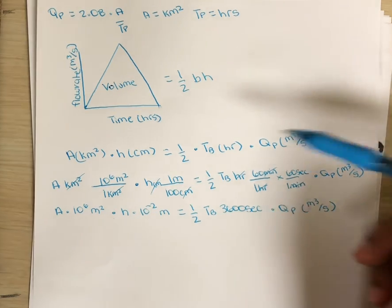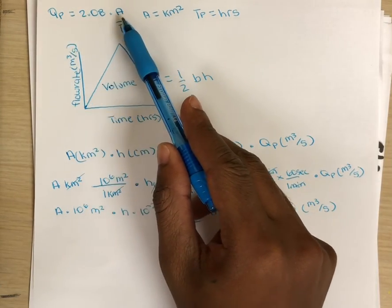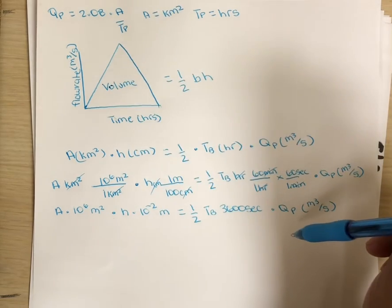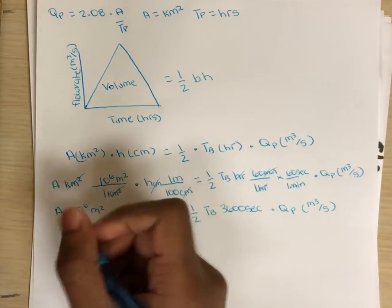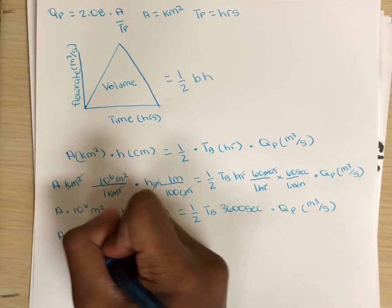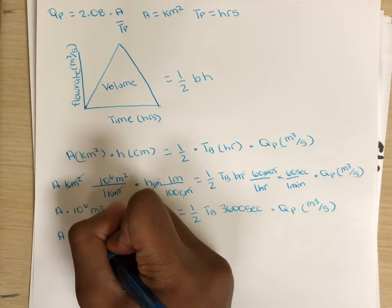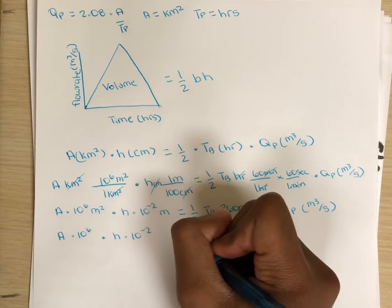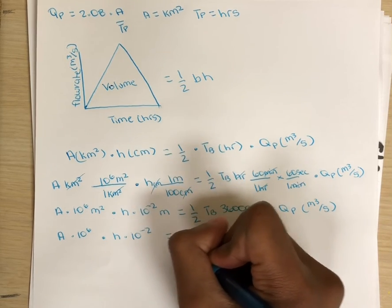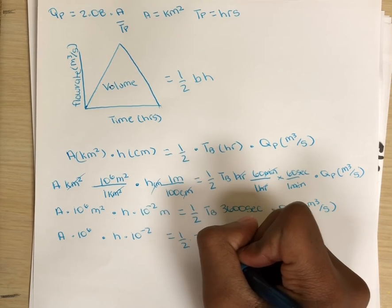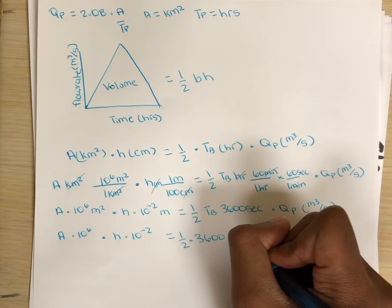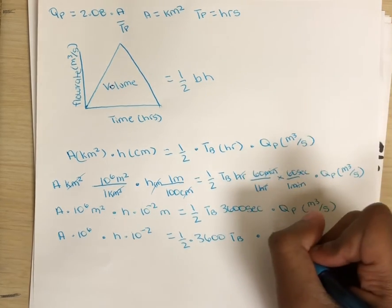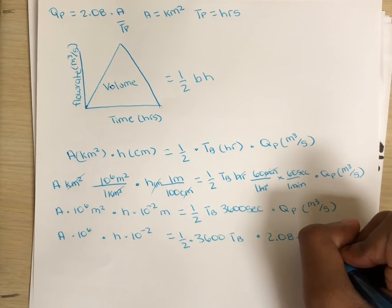Now looking back, we know that QP is equal to 2.08 times A over TP. So let's substitute that into our equation, replacing QP. So we have A times 10 to the negative 2 meters equals one-half times tb times 3,600 seconds times 2.08 times the area divided by tp.